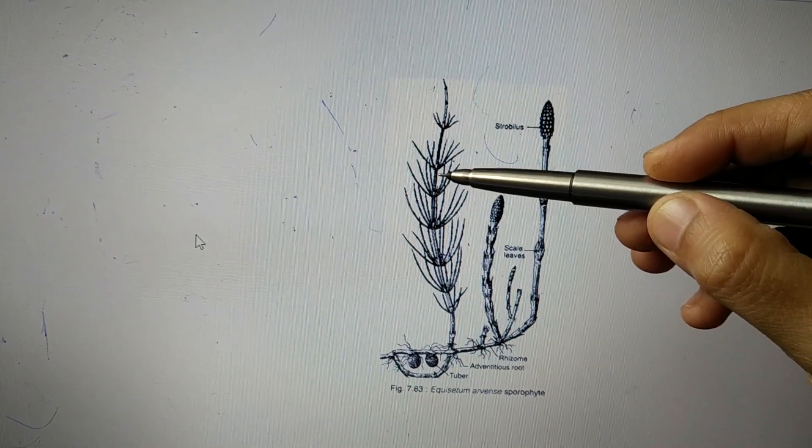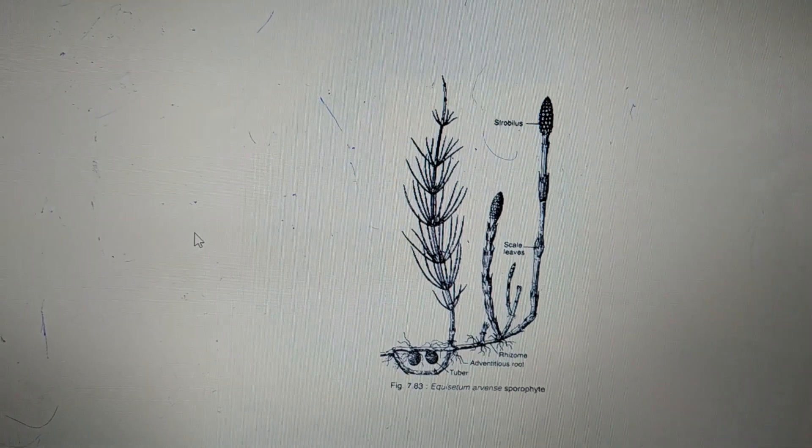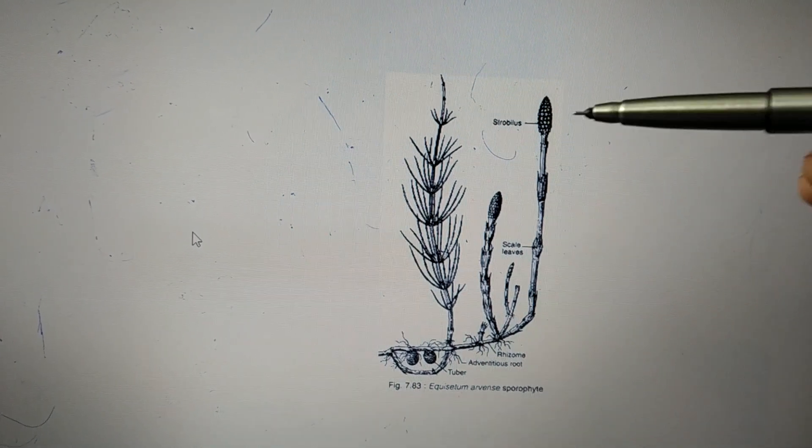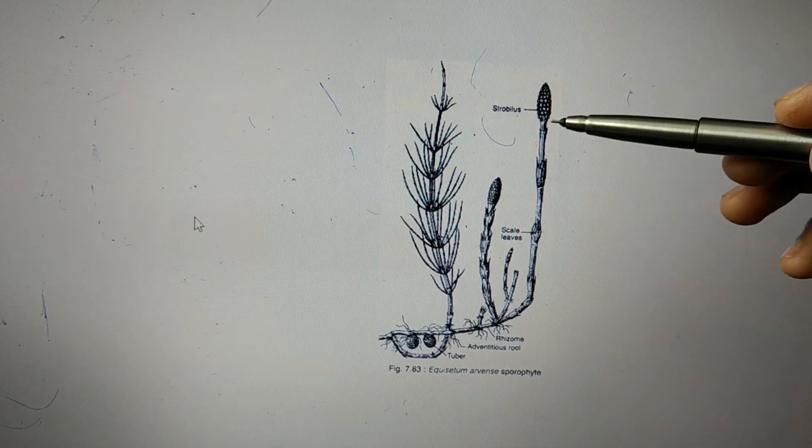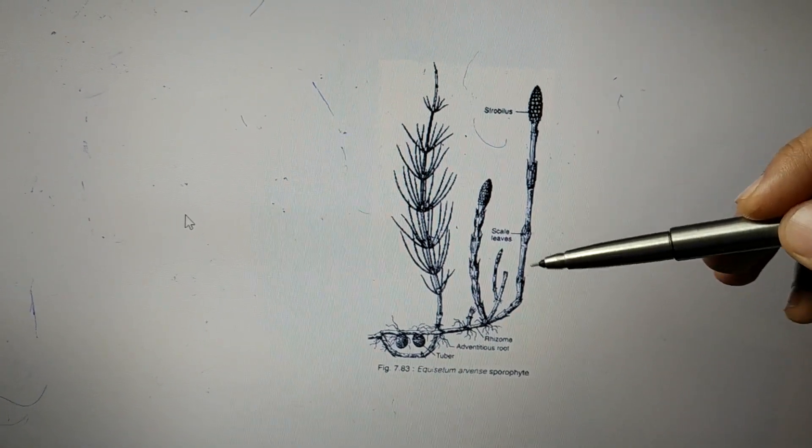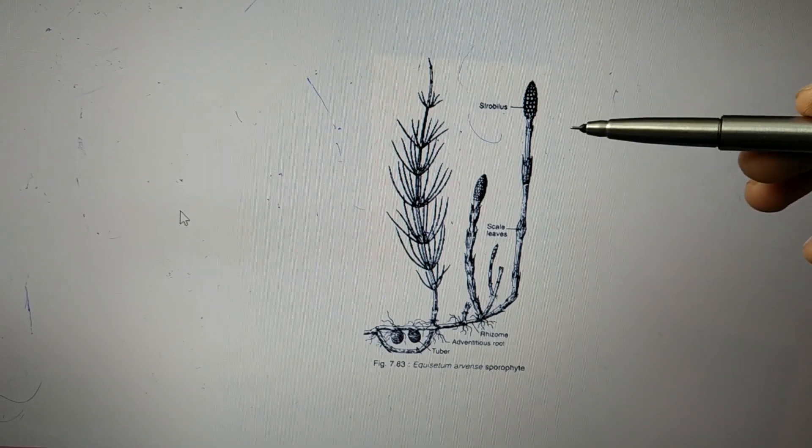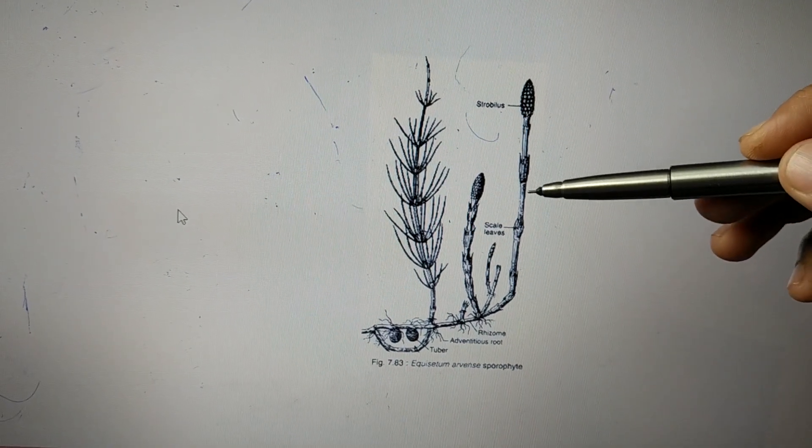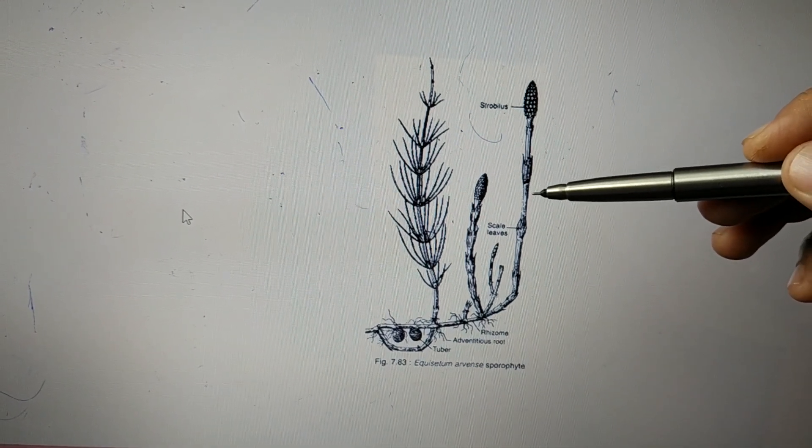This is the connection between leaves and ridges. Speaking about the fertile stem, these stems are brownish in color, don't have leaves, and have a scaly appearance. They are achlorophyllous in nature.